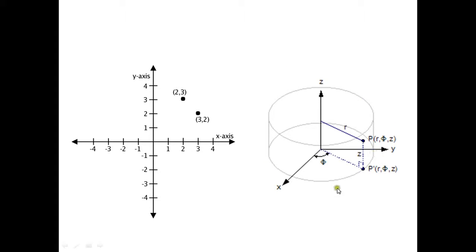Another coordinate system is the cylindrical coordinate system, which is very important for projections in GIS. These coordinates are represented using a cylinder. To find a point p-prime, we use the radius r from the center, the angle phi from the x-axis, and the height g. This defines a point in the cylindrical coordinate system.